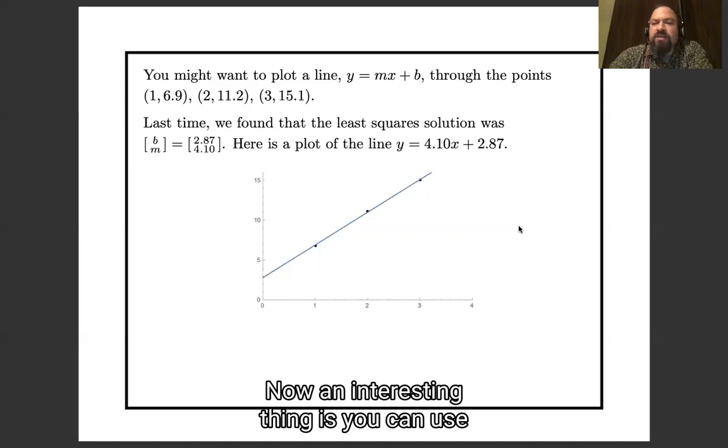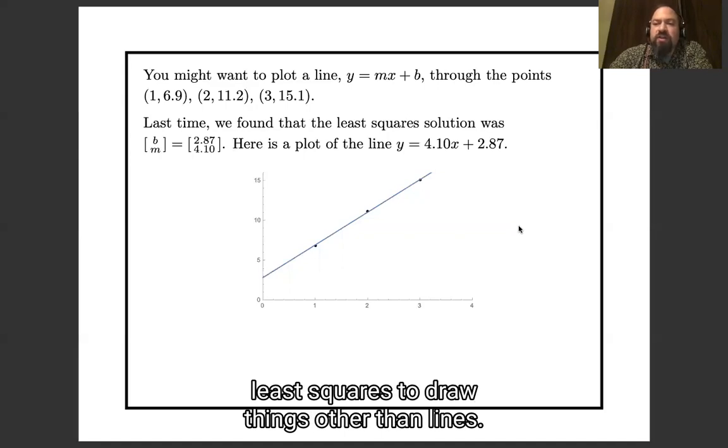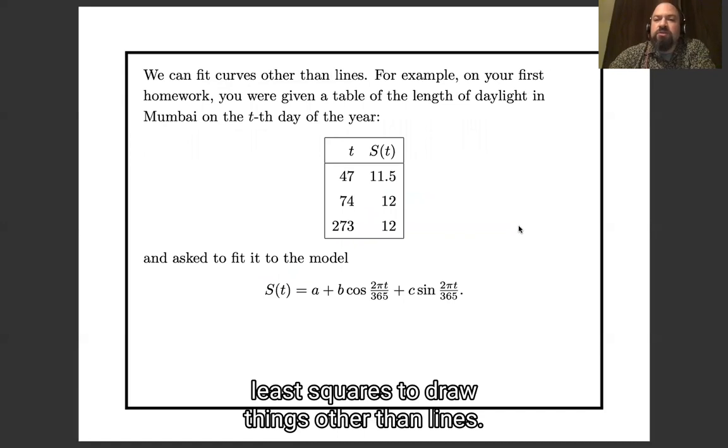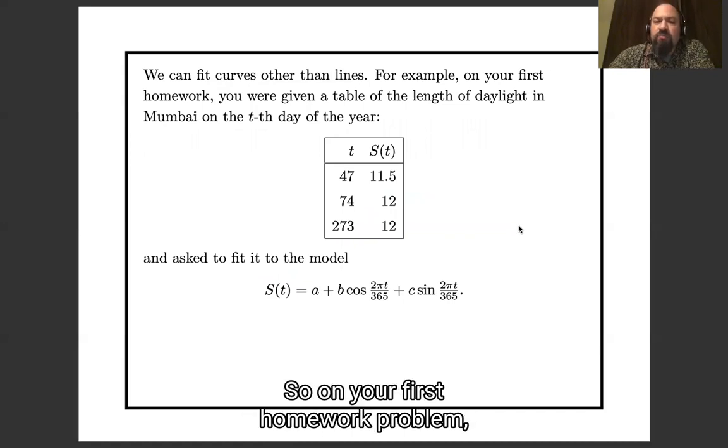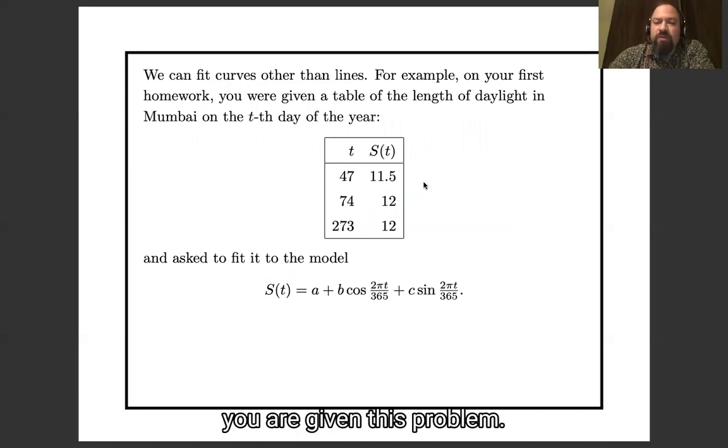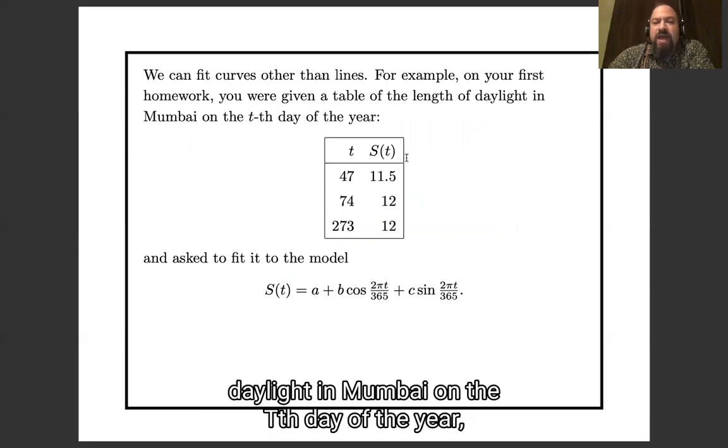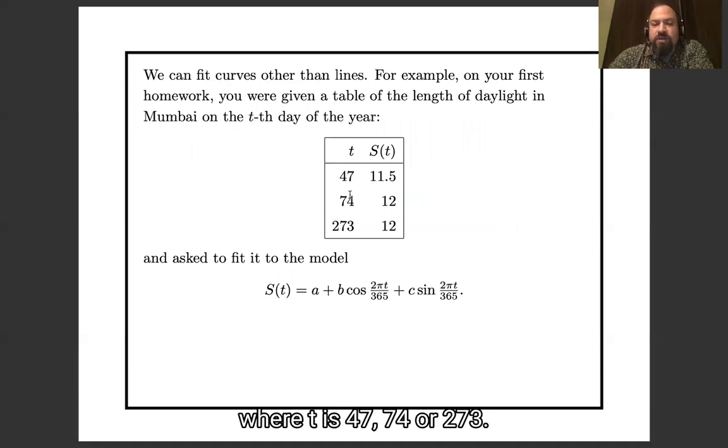Now an interesting thing is you can use least squares to draw things other than lines. So on your first homework problem you were given this problem: here is the number of hours of daylight in Mumbai on the tth day of the year, where t is 47, 74, or 273.